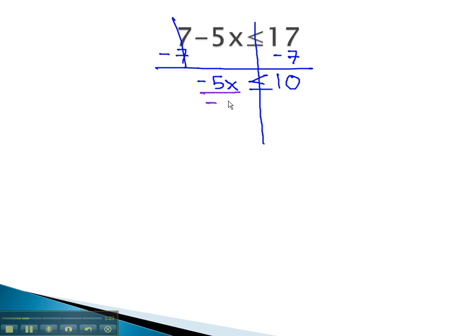Get the x alone by dividing both sides by the negative 5. Notice here, we are dividing by a negative. This means the inequality is going to have to switch directions. We now have x is greater than or equal to negative 2.